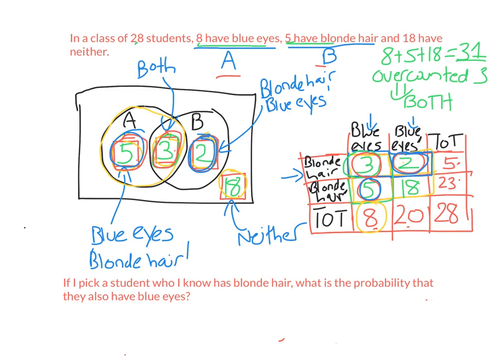Now let's try this question: I pick a student who I know has blonde hair. What is the probability they also have blue eyes? Because I said I know the student has blonde hair, I'm restricting myself to people with blonde hair only — that circle in the Venn diagram, or those 5 students in the two-way table. Of those 5, three have blue eyes. So the answer is 3 over 5. This is a little more difficult because I'm not picking from all 28 students; I'm only picking from the 5 who have blonde hair.